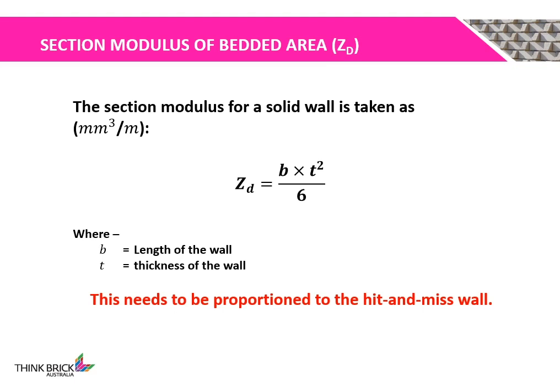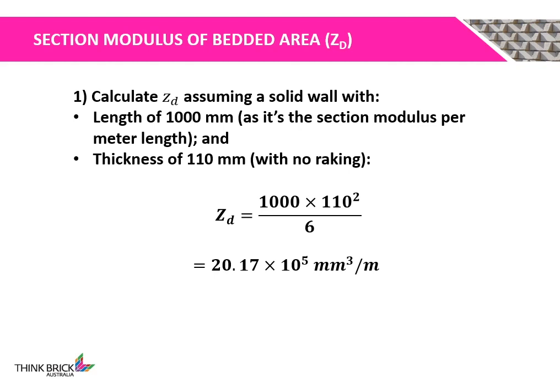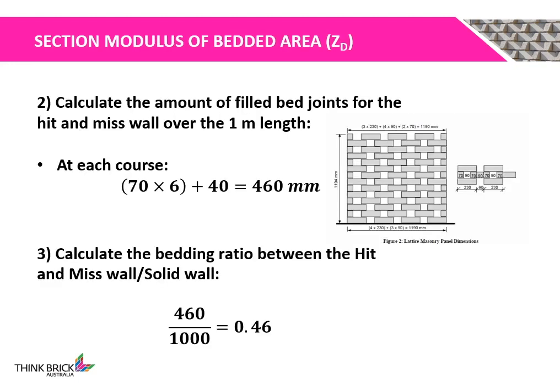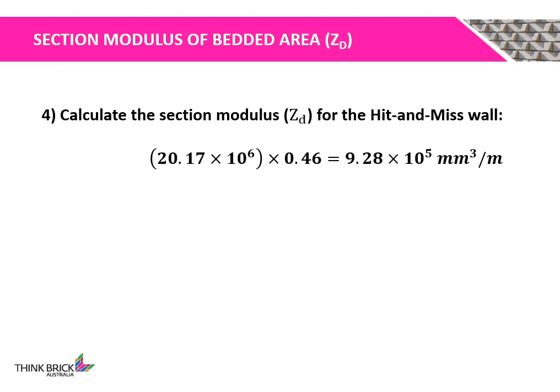Next, the section modulus of the bedded area Zd is calculated by multiplying B (the length of the wall) by the wall thickness squared, divided by 6. It is important to proportion this to the Hidden Mist Wall. Assuming a solid wall with a length of 1000 mm and thickness of 110 mm with no raking, the section modulus per meter run is calculated. Then, the amount of filled bed joints over 1 m length is calculated to be 460 mm at each course, giving a bedding ratio of 0.46. The section modulus for the Hidden Mist Wall is then calculated by multiplying the solid wall section modulus by the bedding ratio, giving 9.28 × 10⁵ mm³ per meter run.